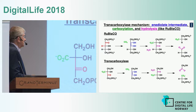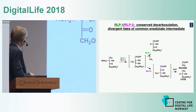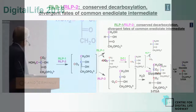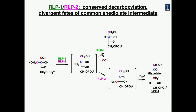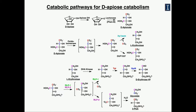Rubisco itself does a carboxylation of an enediolate to make a ketone, which is then hydrolyzed to generate two carboxylic acid products. This transcarboxylase does the same thing on a different substrate, performing a decarboxylation to make a sequestered CO2, which is then used to carboxylate the adjacent carbon. So we have two Rubisco-like proteins in the apiose catabolic pathways that use the same substrate but are functionally distinct: one does a decarboxylation, and the other does this transcarboxylation-hydrolysis reaction.